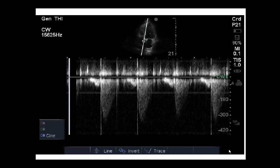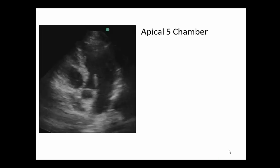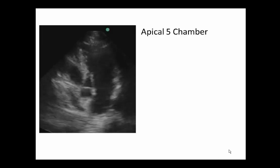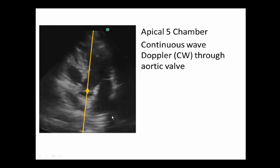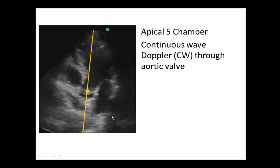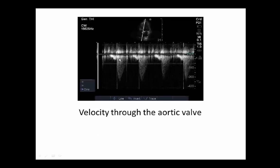Just to make sure you know what we're doing here, because it's hard to tell from the still image. All we've really done is gotten an apical five-chamber view of the heart, so our fifth chamber is visible. We've stuck a continuous wave Doppler gate right there in the aortic valve to get some velocities right through the valve. When we do that, we get this tracing — a pretty high velocity through the aortic valve.